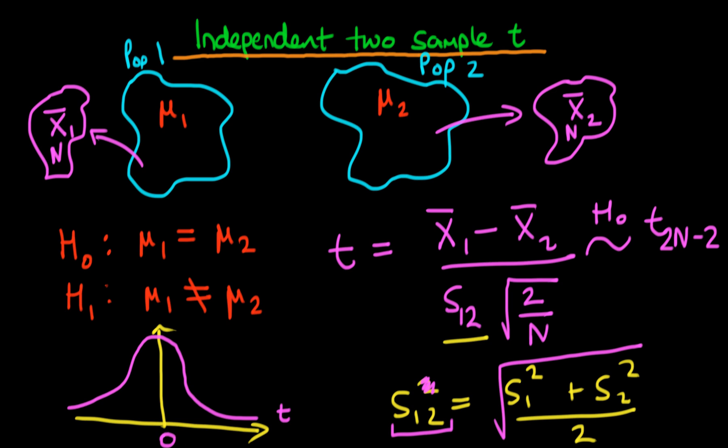How can it be the case that we would actually reject the null hypothesis using this particular test statistic? Well, if there's a big difference between the two individual sample means, then that can result in a t-statistic which is either very high, so it's somewhere up to the right here, or it can be very low. It can be negative if x-bar 1 is actually less than x-bar 2. So this has to be big when compared to S1,2.